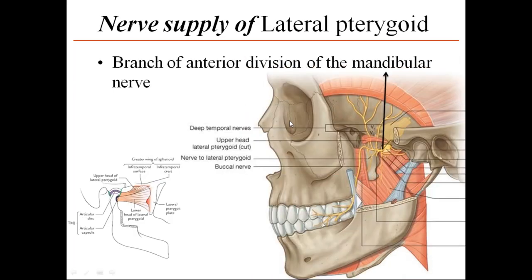The nerve supply of the lateral pterygoid is from a pterygoid branch arising from the anterior division of the mandibular nerve.